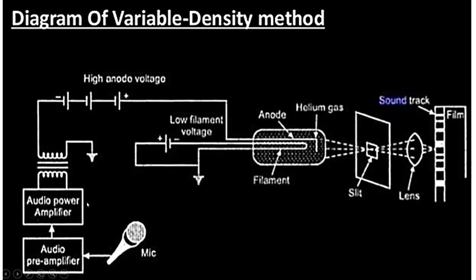As shown in the diagram, the microphone feeds into the audio amplifier, then the audio power amplifier, which is connected to the AEO lamp. The input is given to the anode, and the intensity of light depends on the input audio signal. This light falls on the photographic film through a slit and the focusing lenses, and the soundtracks are recorded. This is the diagram of the variable density method.